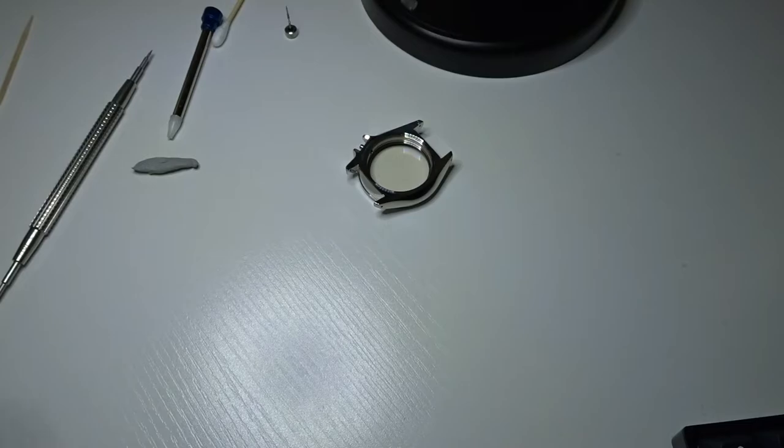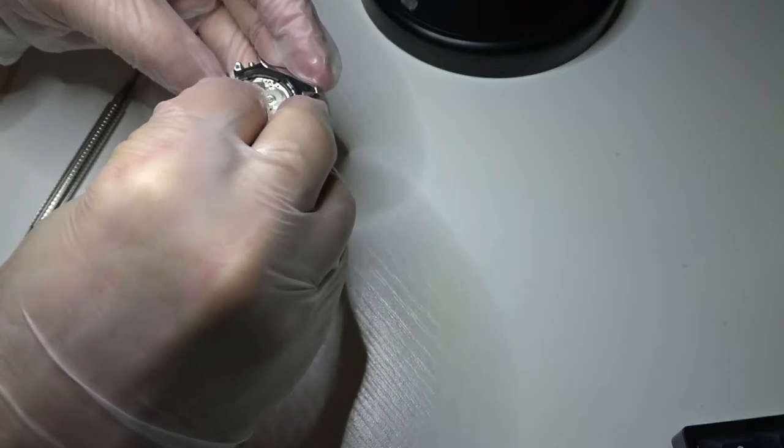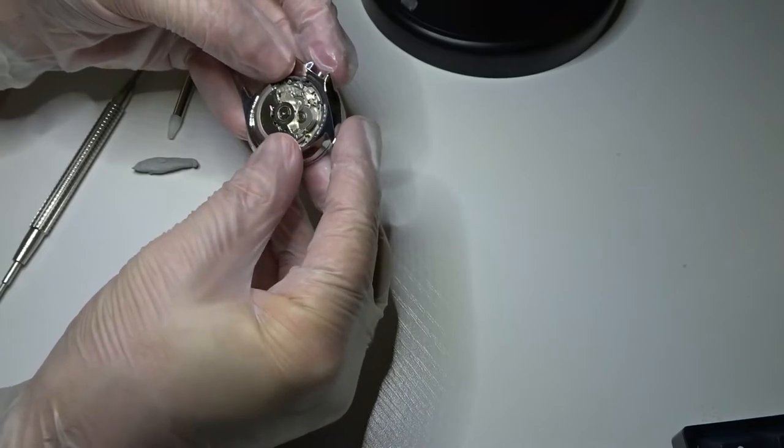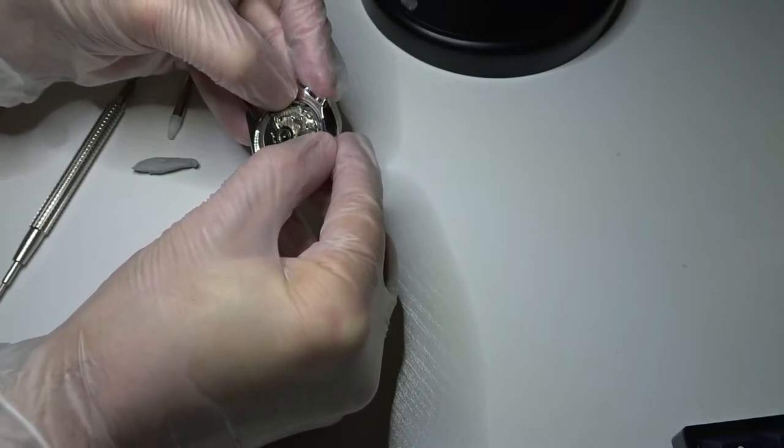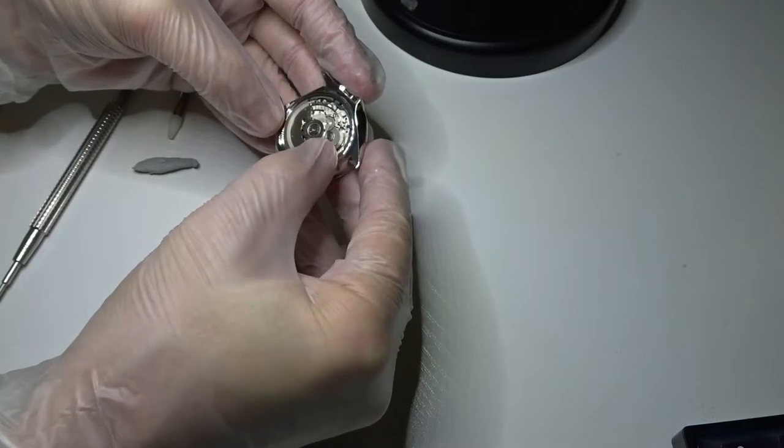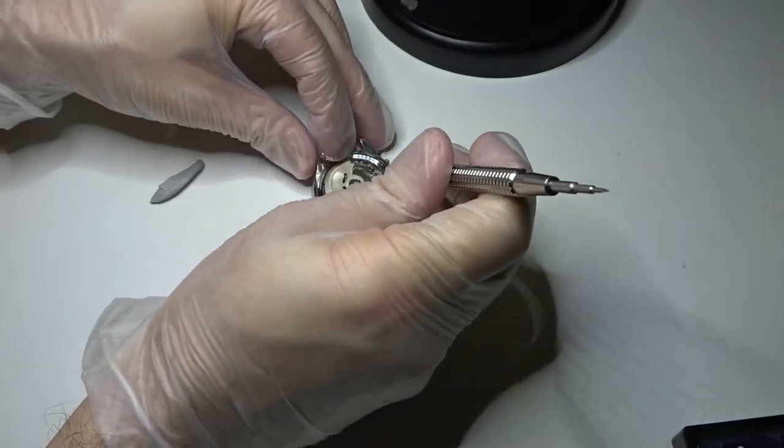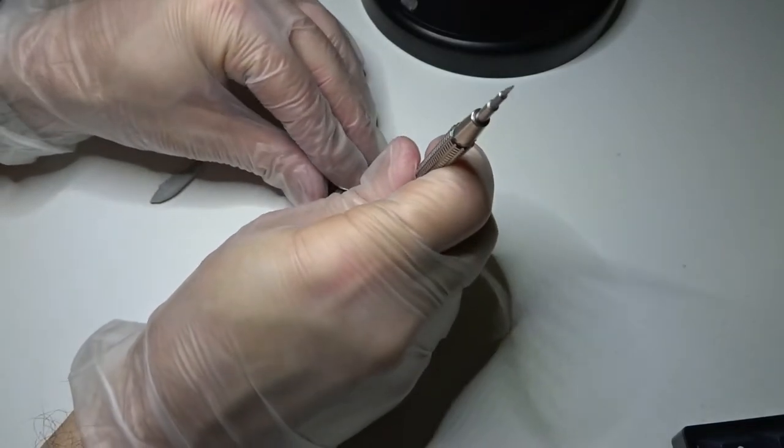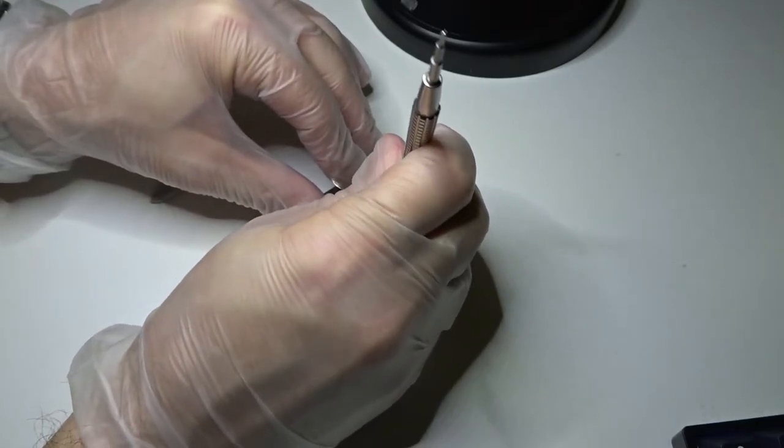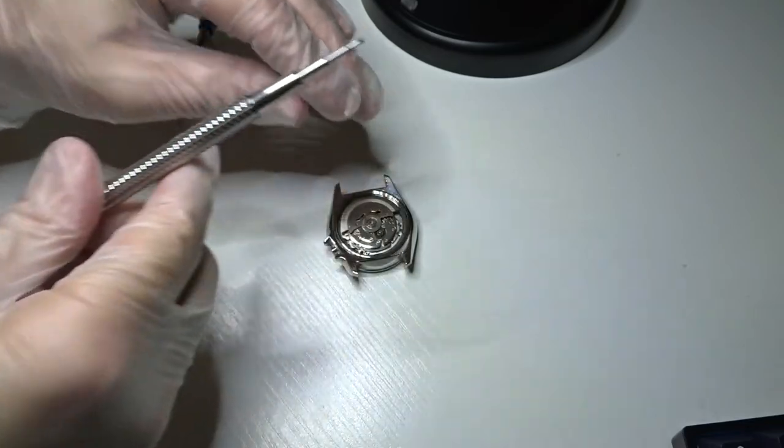So putting the movement back into the case, usually not a big deal. You just got to make sure that on the movement, the hole where the stem goes in, it's got to line up with the watch case where you insert the stem into the case. So if you align those two things, then you'll be able to press down. Sometimes it's a tight fit, like on this one it's kind of tight. So what I have to do is I just firmly press down on that plastic movement holder and I just go around the movement and try to do it evenly, just to make sure that the movement's fully seated into the case.